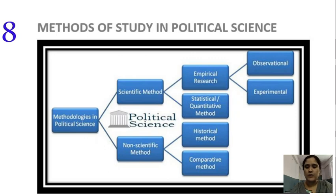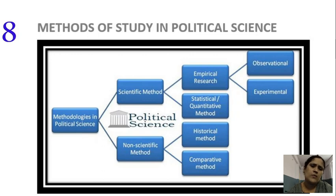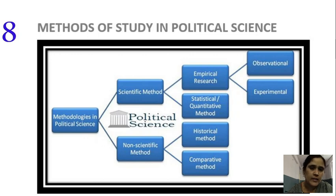Thank you. In the next upcoming class, we are going to learn about political science and other social sciences. You can write notes from the description given below. The scope of political science is very important and comes for 10 marks, while the significance of political science comes for 5 marks. For a 10-mark answer, write introduction, two definitions, explanation, and conclusion. For a 5-mark answer, write introduction, explanation, and within two points write the conclusion.